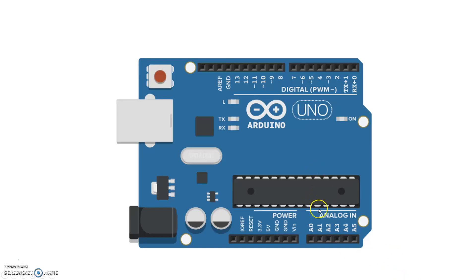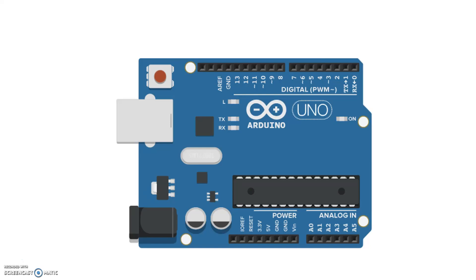To do analog write, the Arduino is set up such that certain digital pins — specifically the ones that have a tiny tilde symbol associated with them — for example pins 9, 10, 11, 6, 5, and 3 — these six pins can be used to perform an analog write. The Arduino produces an analog value based on a concept called pulse width modulation.